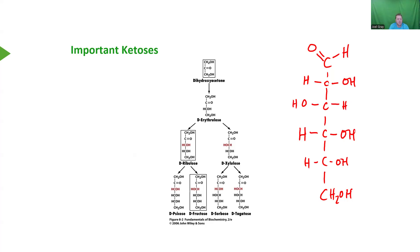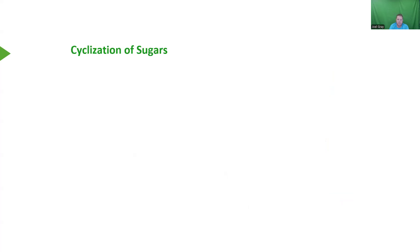So there is glucose. There are the ketoses I want you to know the structures of and be able to identify and change. If I asked you for the structure of L-ribulose, would you be able to pick that out? I would expect you to know the structure of D-ribulose and derive L-ribulose from it.